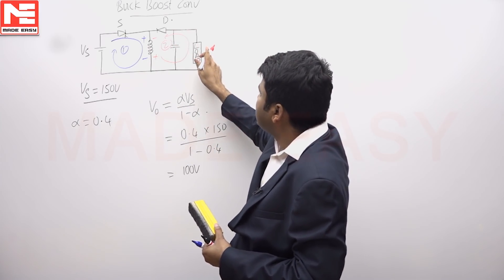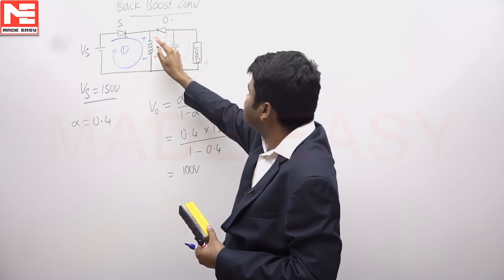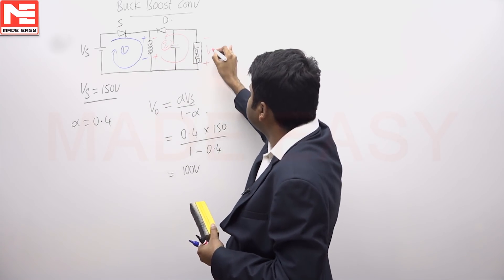In the second mode, what is the voltage across the load? This is plus and this terminal is minus. This is the load voltage.